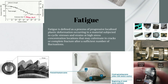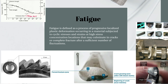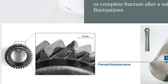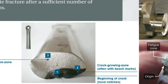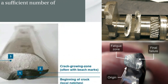In this image you can see gear teeth fractured after undergoing cyclic loading. In this image you can differentiate the beginning of the crack, the crack growing zone, and the final fracture zone. Similarly, here the fatigue origin zone and final fracture are highlighted.